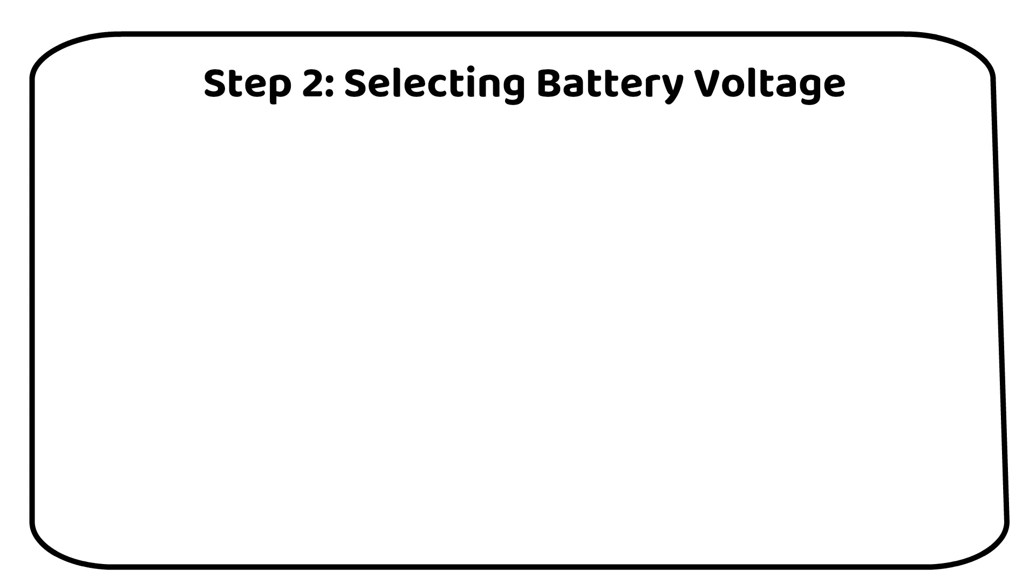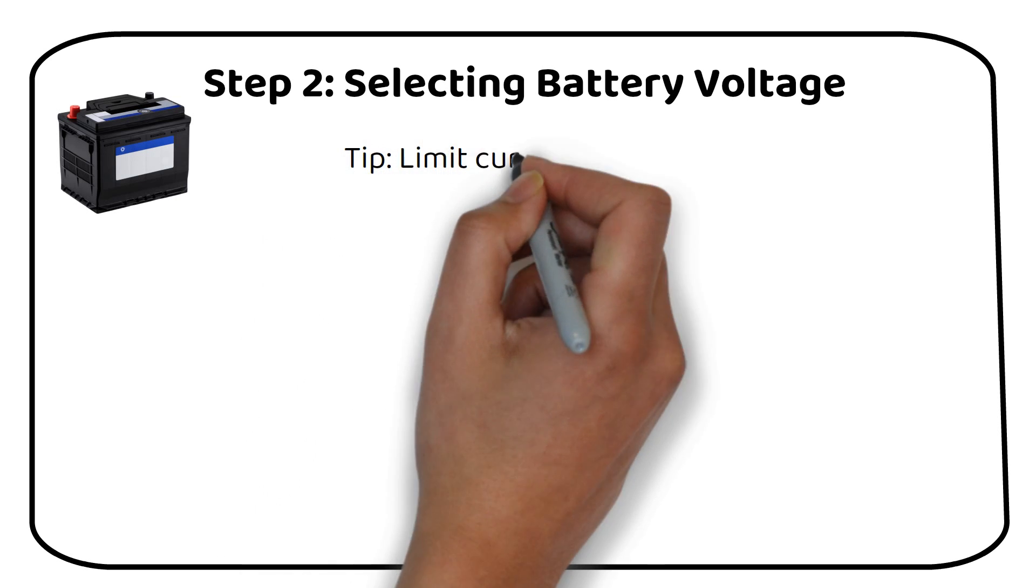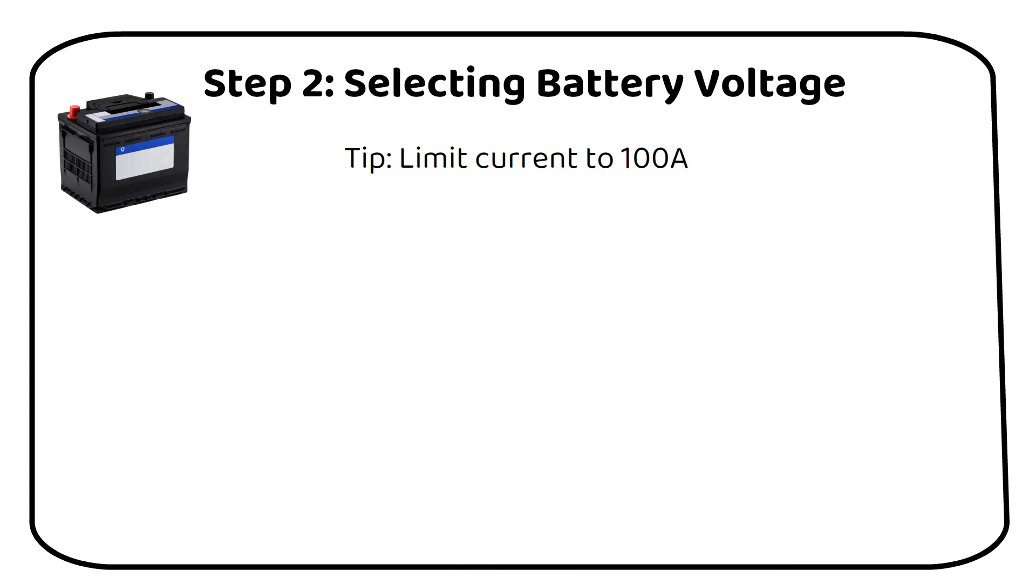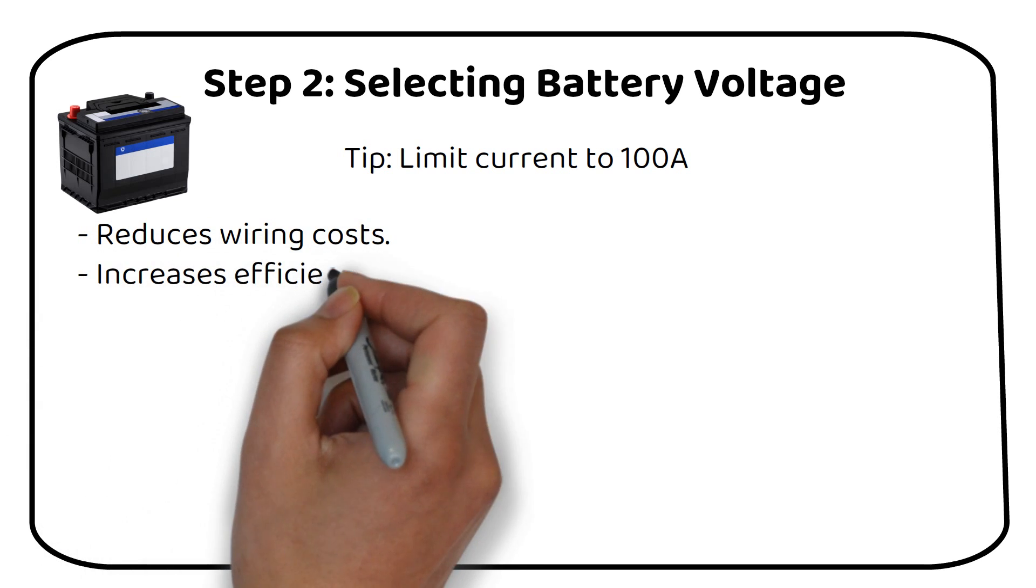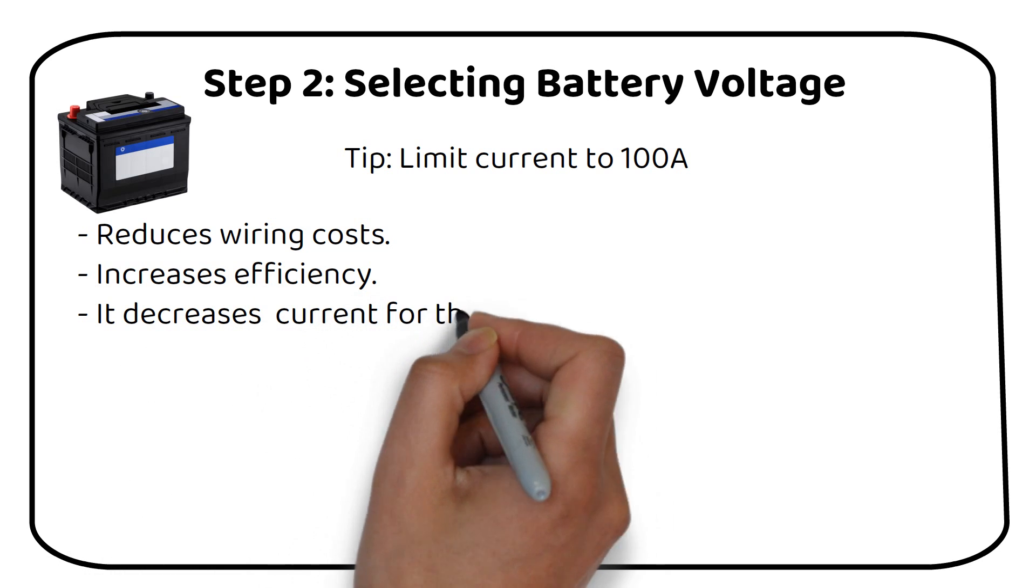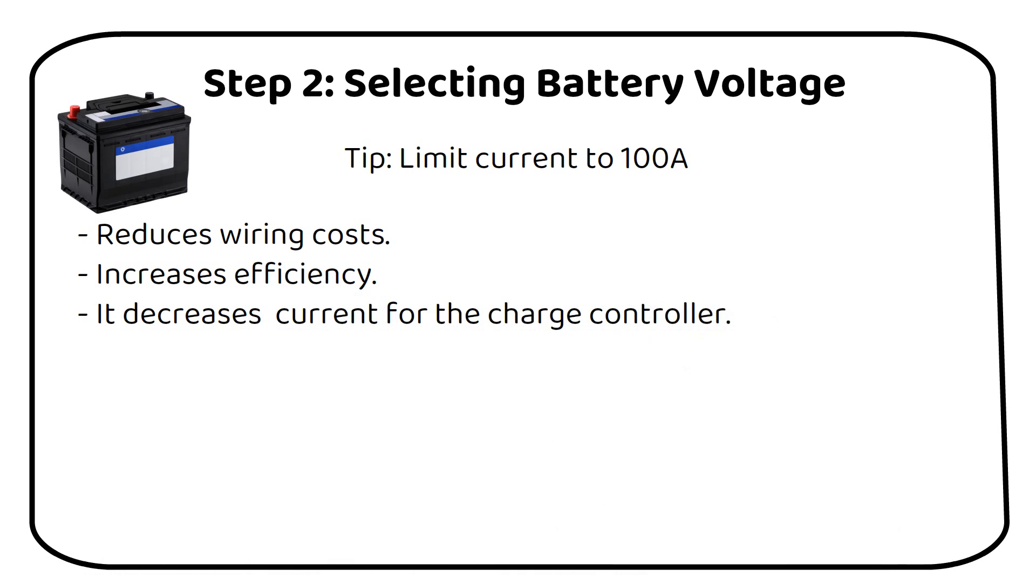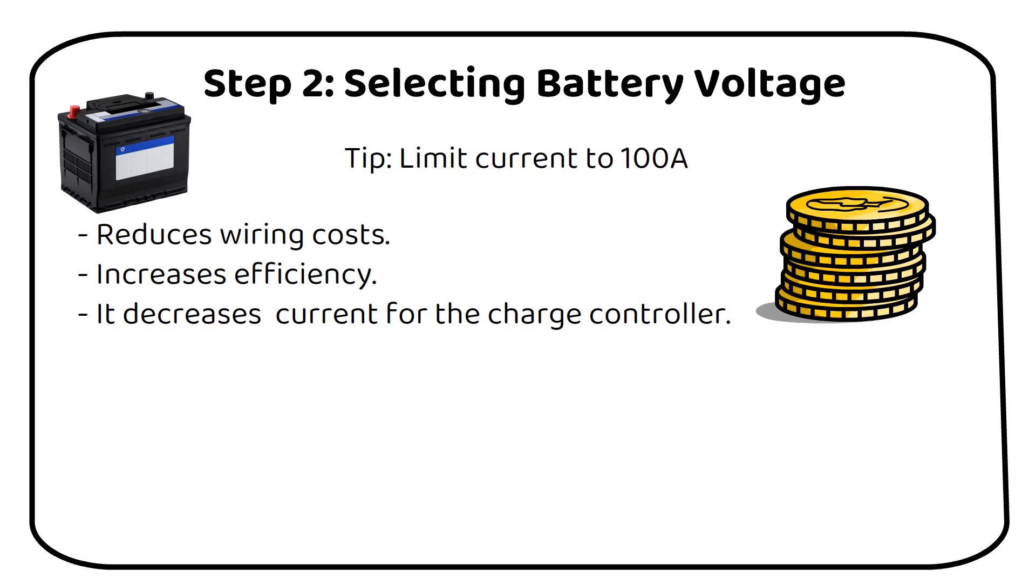Step 2. Selecting battery voltage. Choosing the right battery voltage is a critical decision in setting up your off-grid solar system. As I've discussed in previous videos, it's advisable to limit the current in your DIY off-grid system to 100 amps. Let's quickly recap why opting for a higher battery voltage is beneficial. It reduces wiring costs. It increases overall system efficiency. It decreases the current requirement for the charge controller. All these factors contribute to significant savings in your installation.